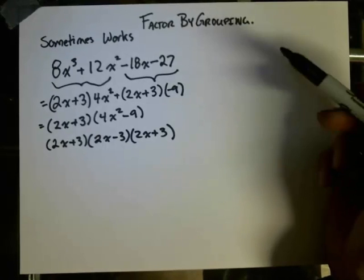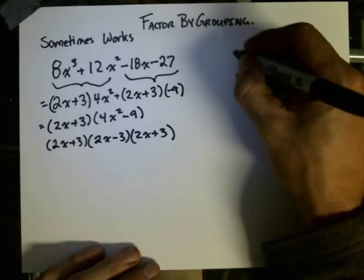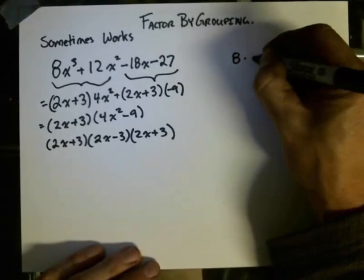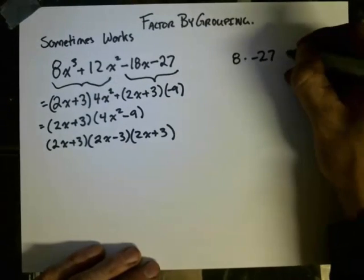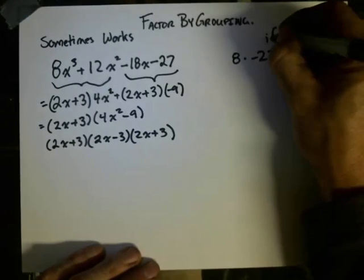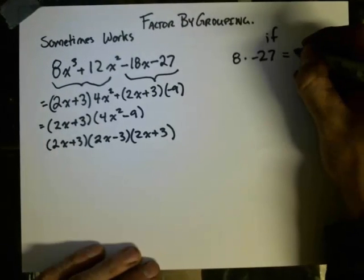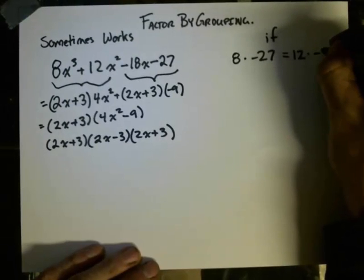Now, there is a little secret that you can use. If negative 8 times negative 27, in other words, if the first term times the last term is equal to the second term times the middle term, in other words, 12 times negative 18.